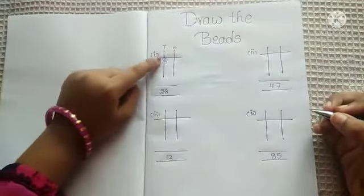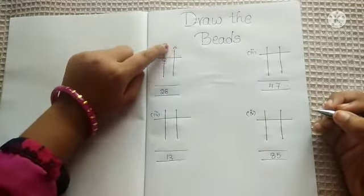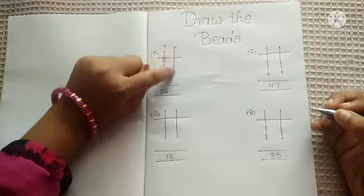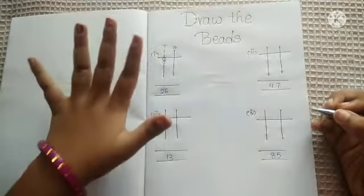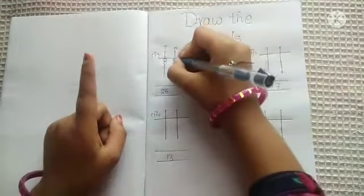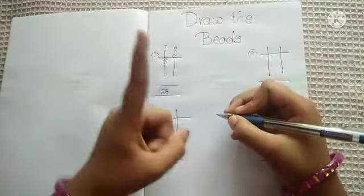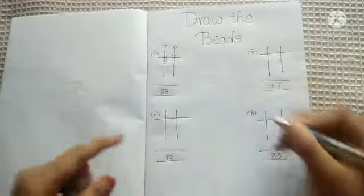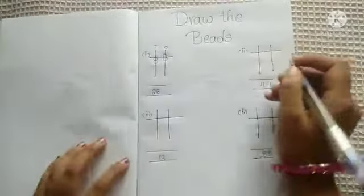Let us draw two beads here, so now it becomes 20. After that we have to draw six beads. Six means we draw five beads on the upper deck and one bead on the lower deck, so now it becomes 26. Let us do the next one.